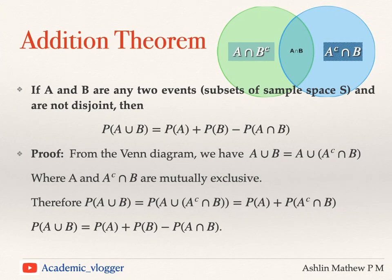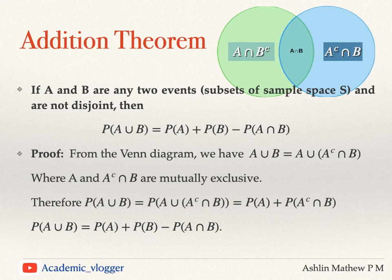The addition theorem is of importance when the events A and B are not disjoint. So if A and B are any two events which are subsets of the sample space S and are not disjoint, then we can write probability of A union B as probability of A plus probability of B minus probability of A intersection B.